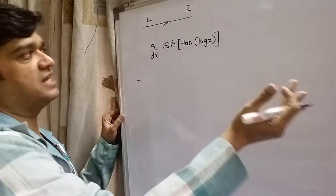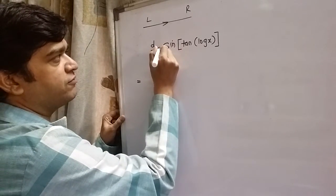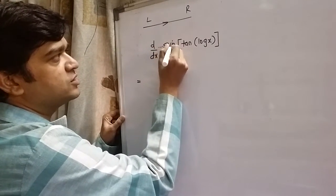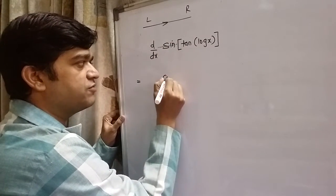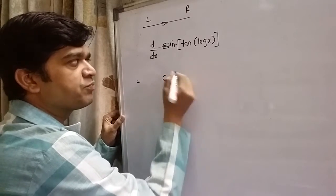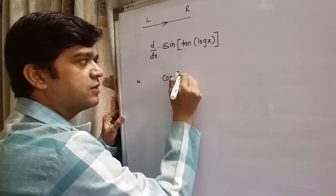So this straight line is first going to cut the sine function. Write down the derivative of sine function, which is cos, and the rest all parts should be written as it is.